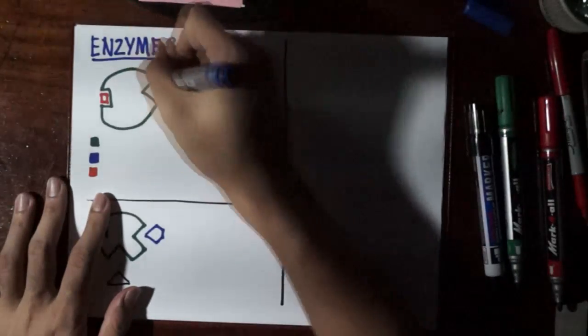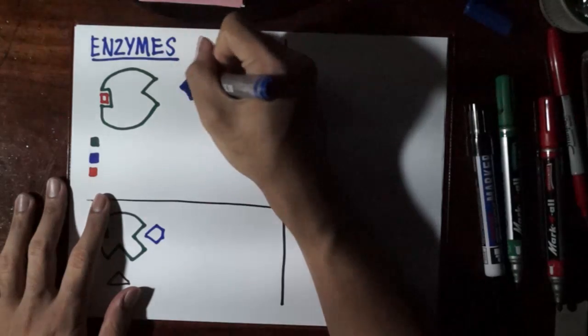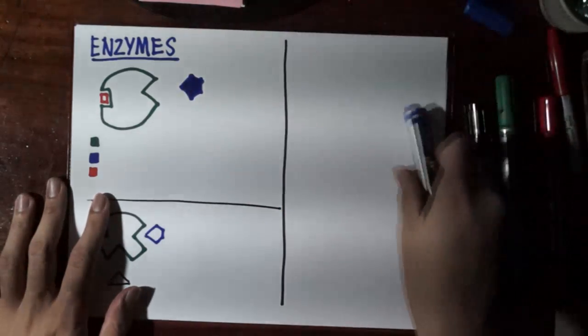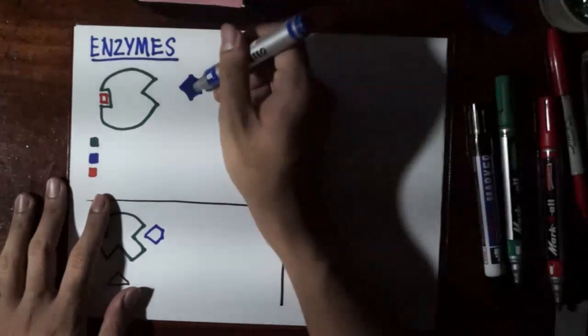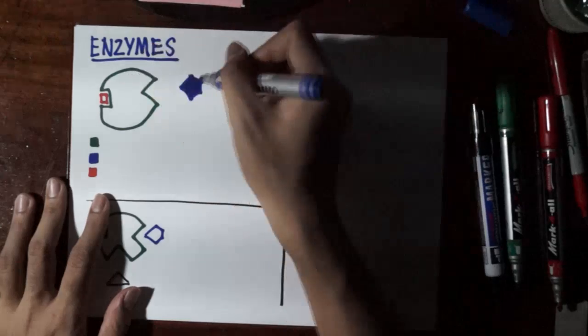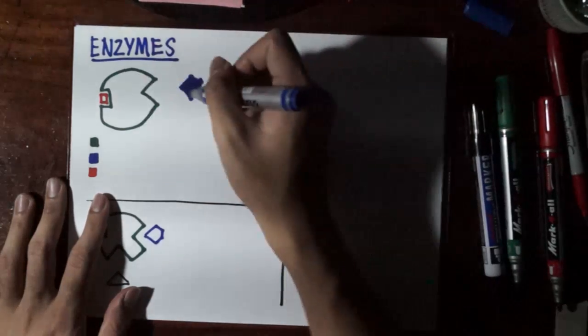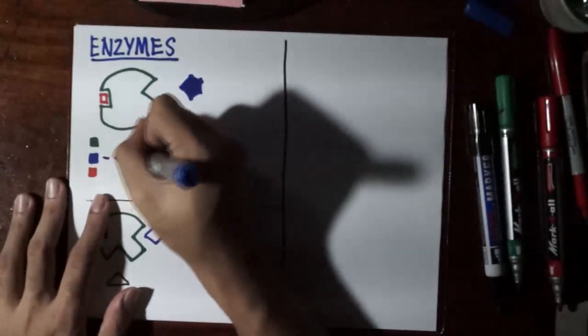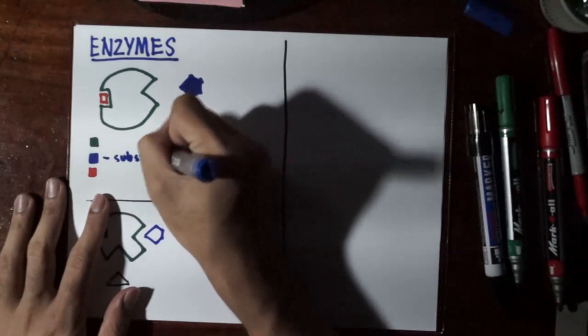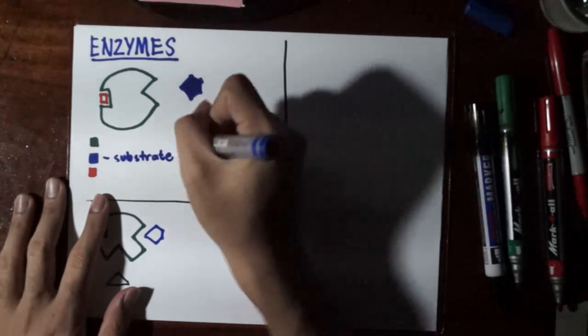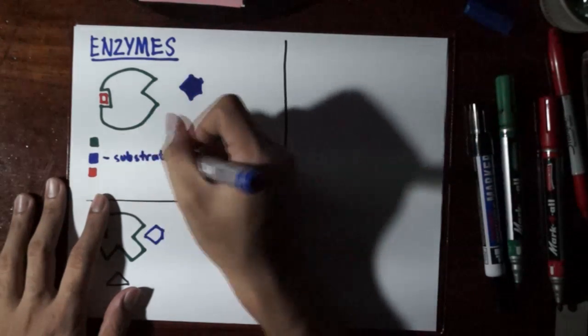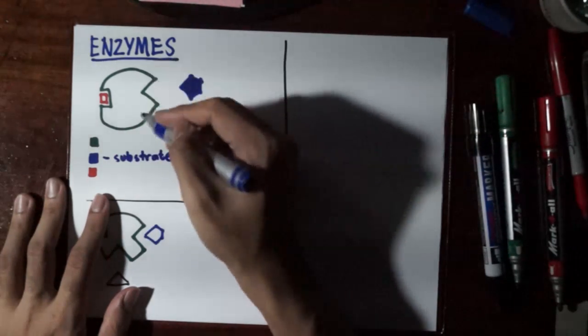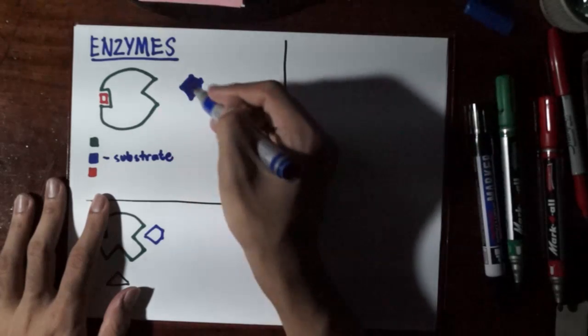The reactant that the enzyme will catalyze into a product is called the substrate. This is the reactant which the enzyme will speed the reaction for.